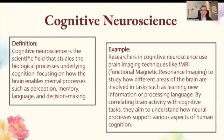Let's get started. Cognitive neuroscience is a scientific field that studies the biological processes underlying cognition, focusing on how the brain enables mental processes such as perception, memory, language, and decision-making. Researchers in cognitive neuroscience use brain imaging techniques like fMRI — functional magnetic resonance imaging — to study how different areas of the brain are involved in tasks such as learning new information or processing language. By correlating brain activity with cognitive tasks, they aim to understand how neural processes support various aspects of human cognition.